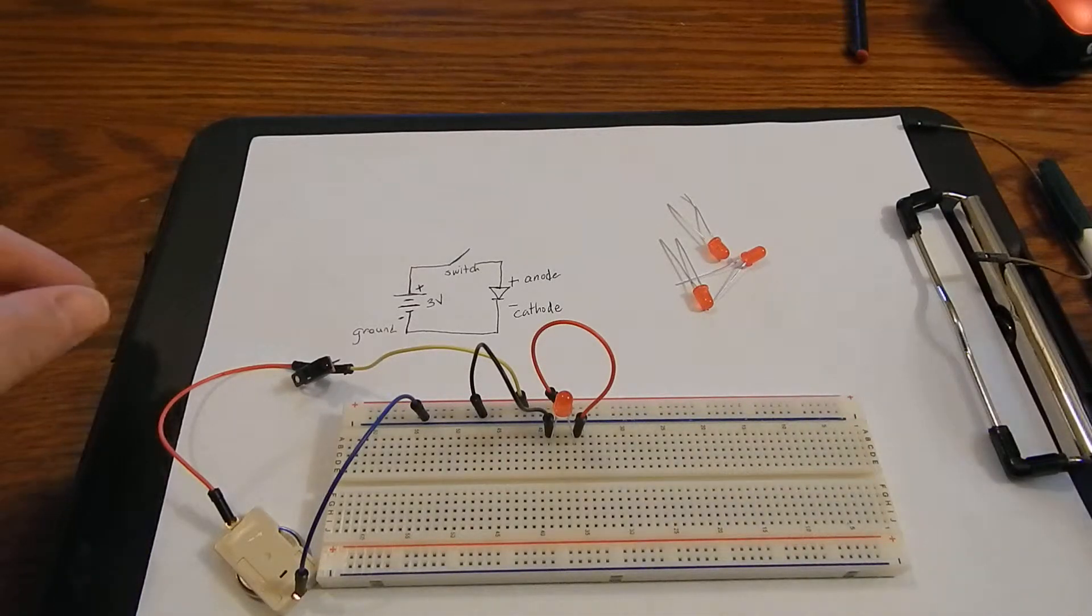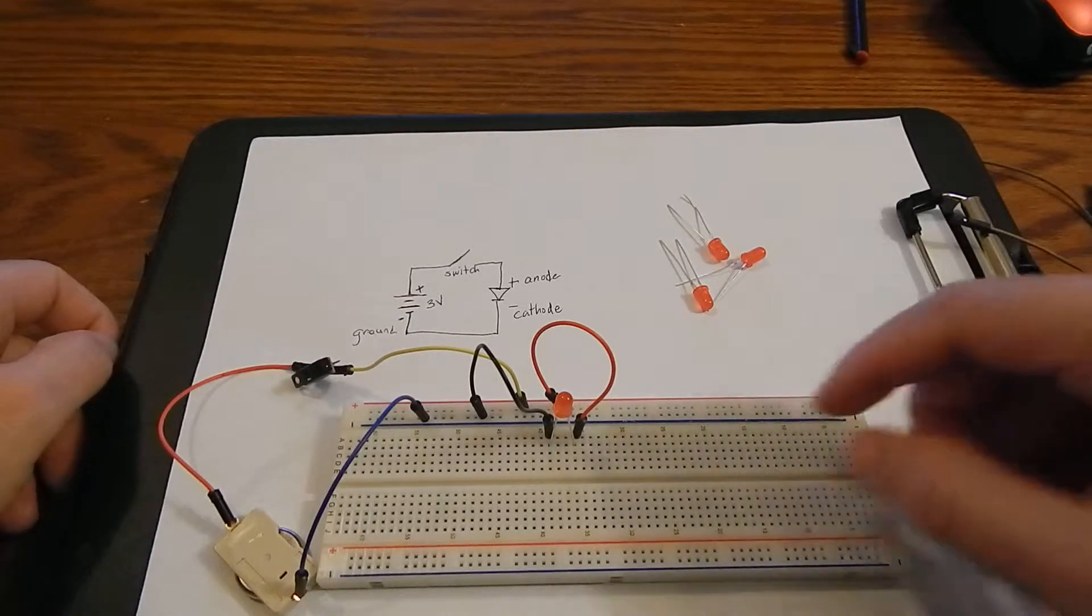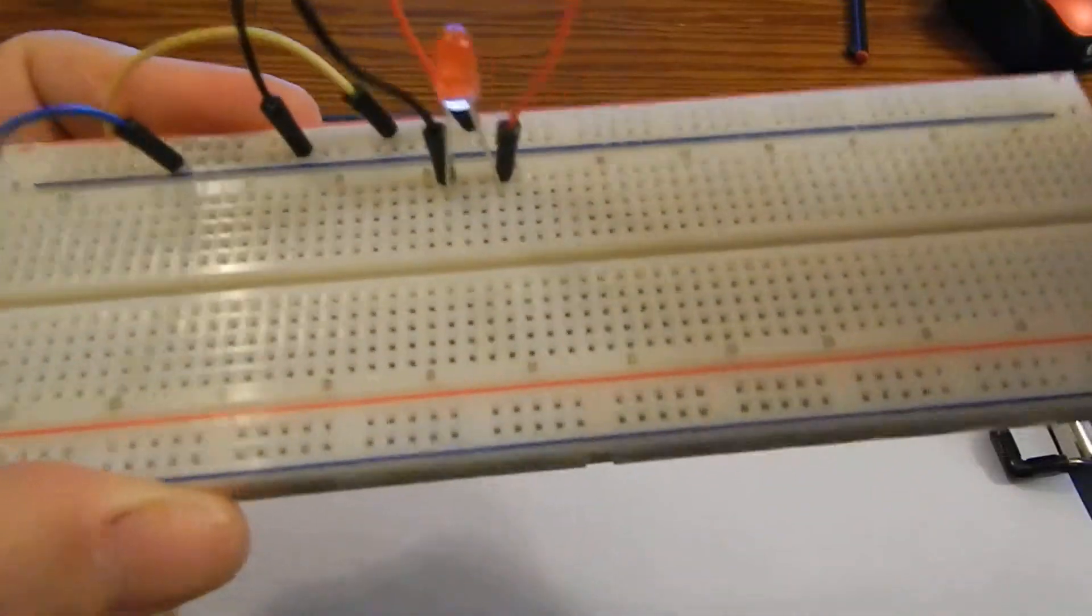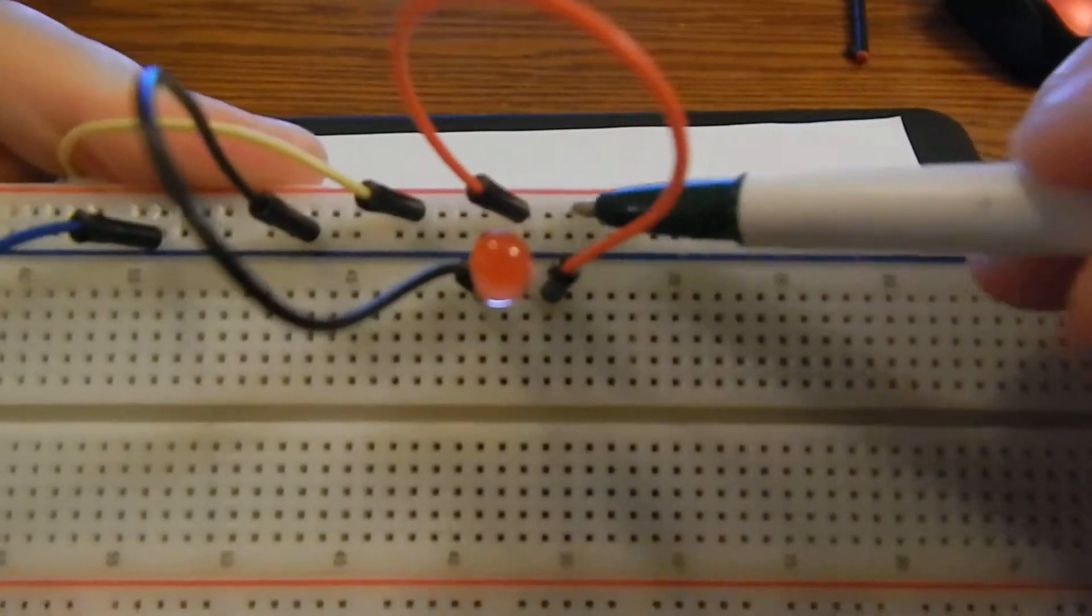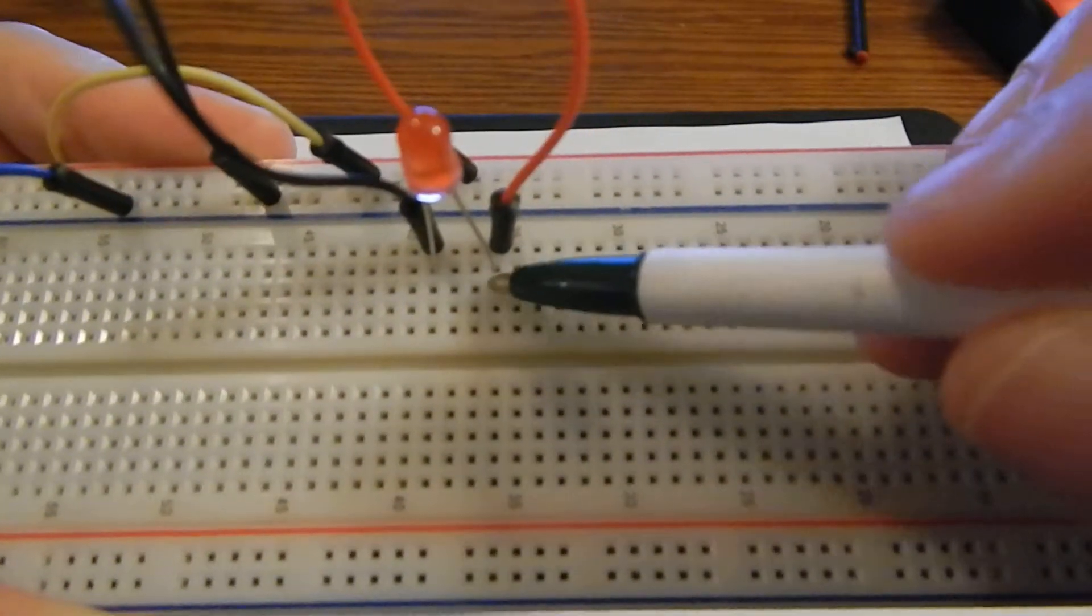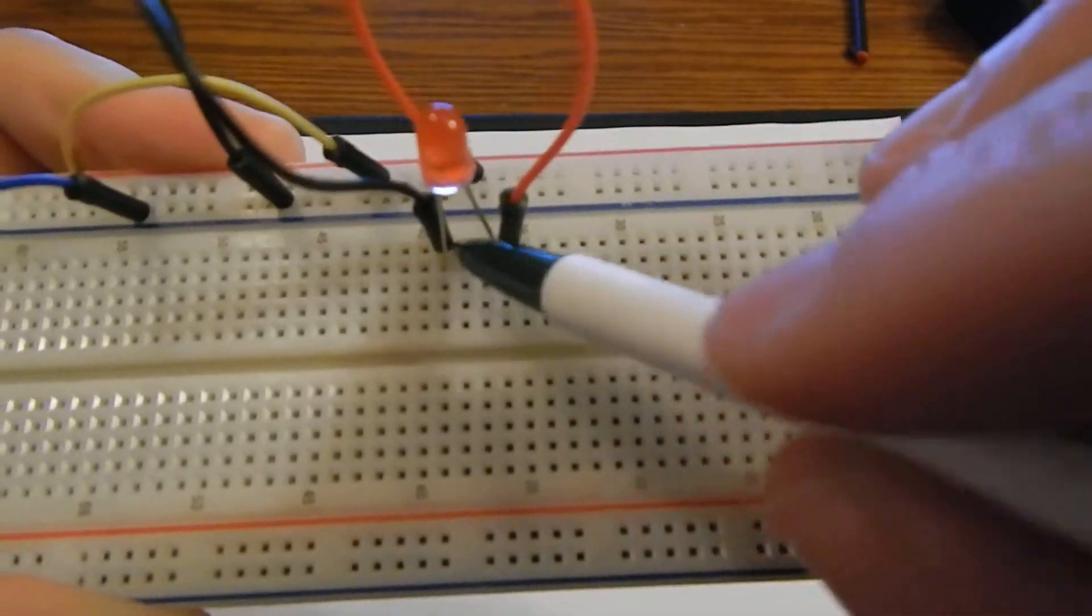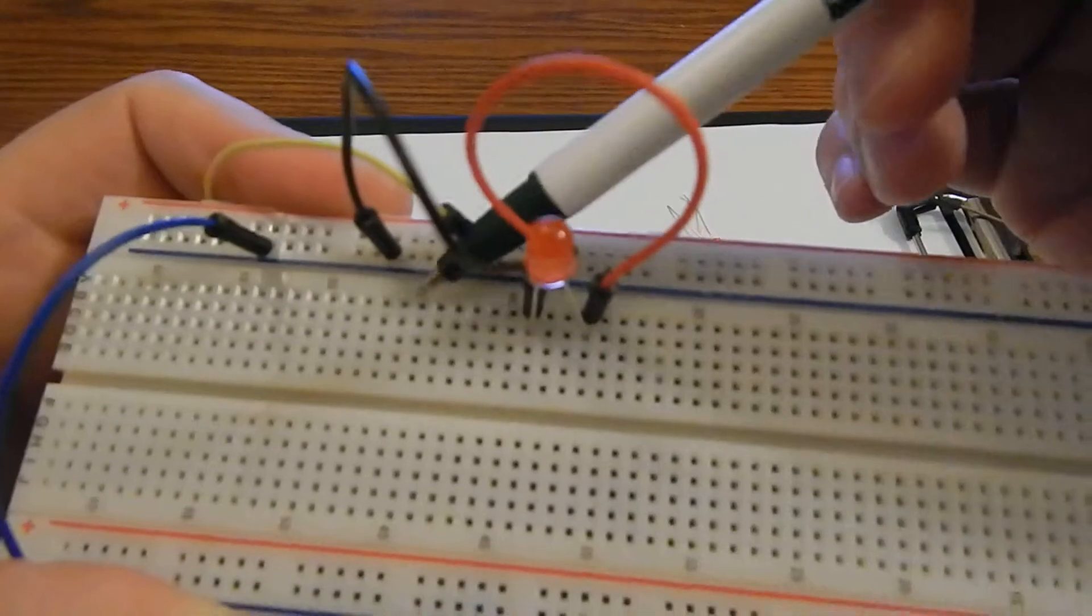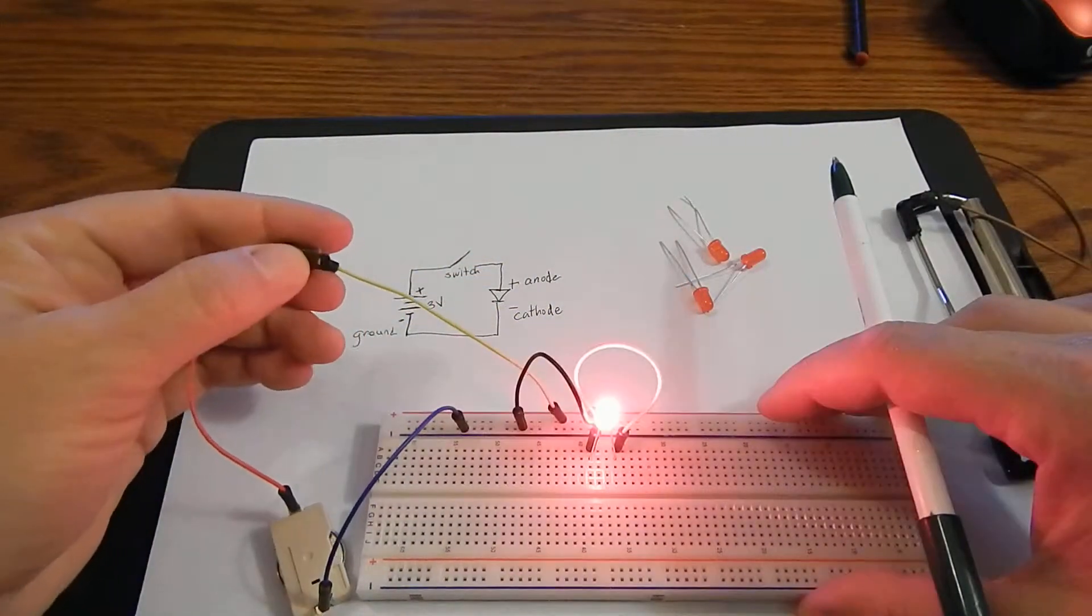But breadboard offers other conveniences which you simply wouldn't be able to do with a wire. For example, I've actually reorganized this a little bit. I still have the positive channel going into a column with the long leg, and the short leg is connected to this black wire which is going into the ground channel. So it's the same circuit, I just changed what holes everything was in.